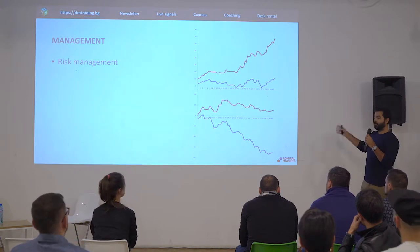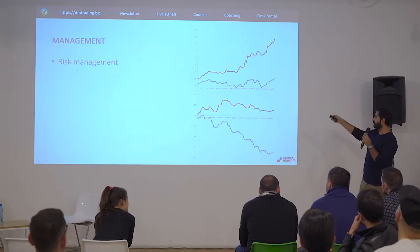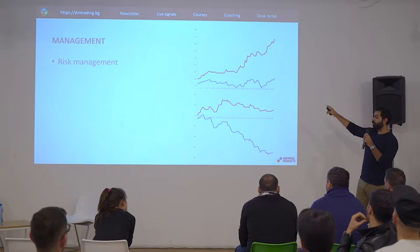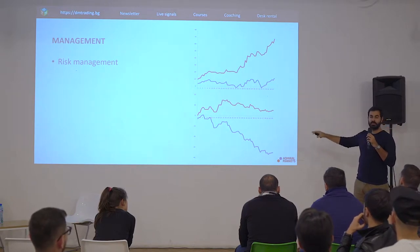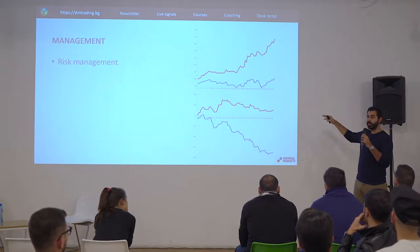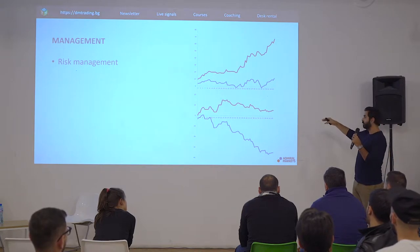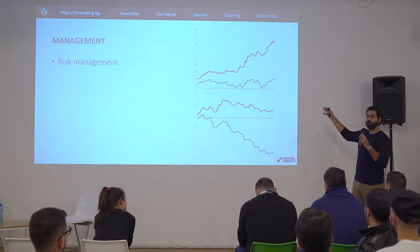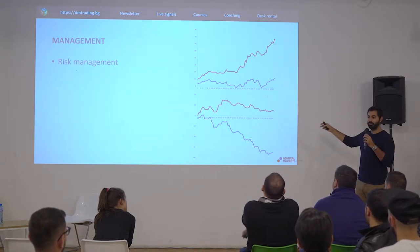After that, you have the risk management. So here you have four different curves — we call them equity curves — four curves, two red and two blue.